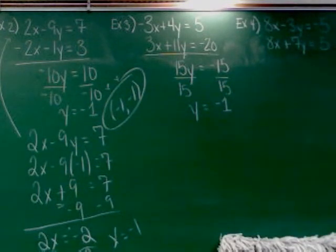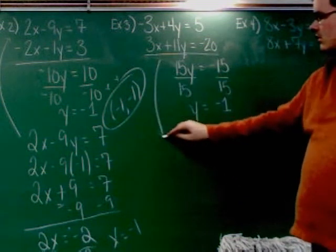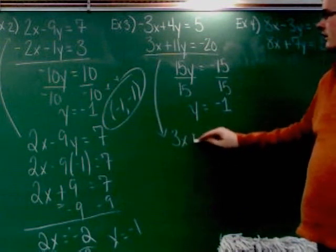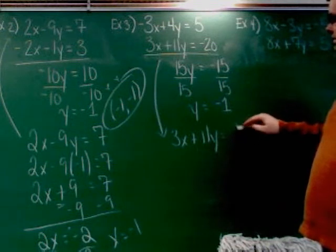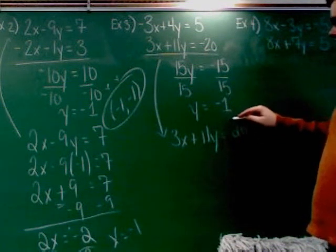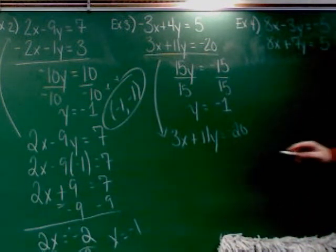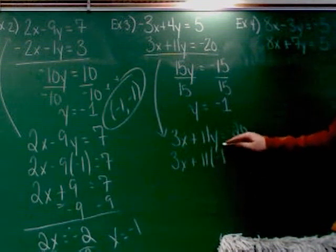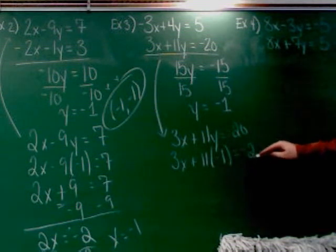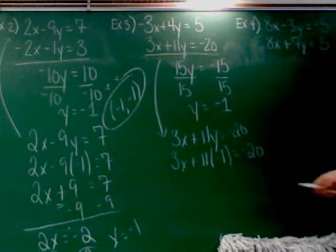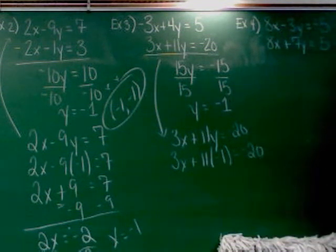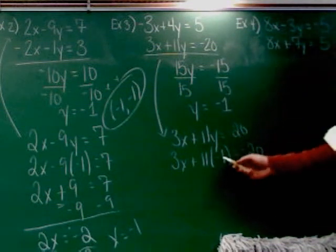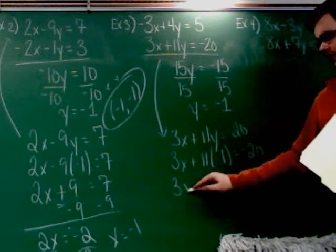Kaylee, you want to plug that back into the top one or the bottom one? Bottom one. Fine. So I've got three X plus 11 Y equals negative 20. And I've got to change Y into negative 1. So 3 X plus 11 times negative 1 equals negative 20. I'm going to simplify that. 11 times negative 1, not the most difficult of multiplications. That's negative 11, sorry.